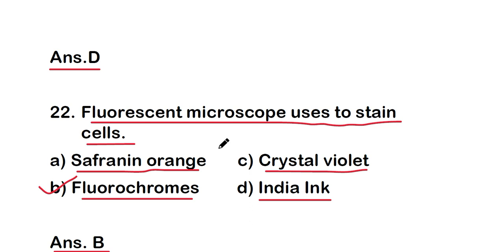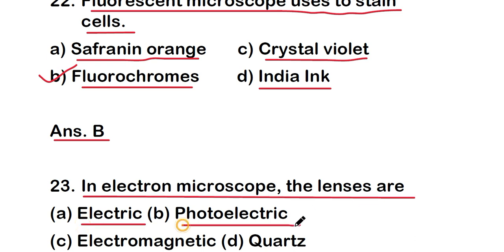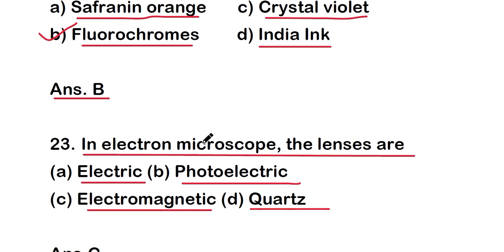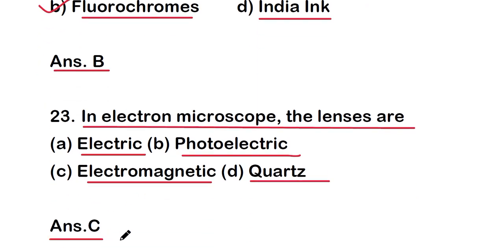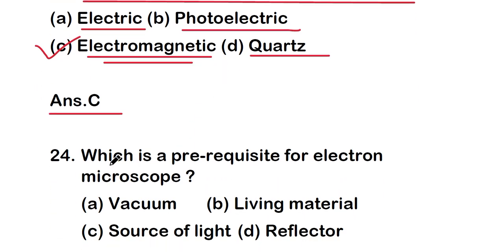Next question: in an electron microscope, the lenses are electric, photoelectric, electromagnetic, or quartz? The right answer is option C — electromagnetic. In an electron microscope, the lenses are electromagnetic.